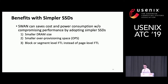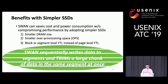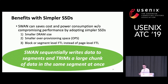An additional benefit of SWAN is that we can use simpler SSDs. SWAN can save cost and power consumption without compromising performance by using simpler SSDs, such as those with smaller DRAM size in the SSD controller and smaller OP space. Alternatively, we can use block or segment-level mapping instead of page-level mapping, which would otherwise increase cost — because SWAN always sequentially writes data to a segment and trims a large chunk of data in the same segment at once.